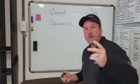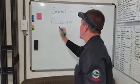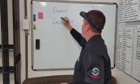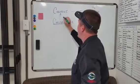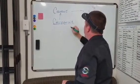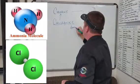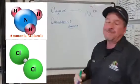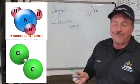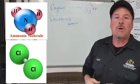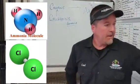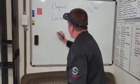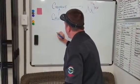All right, here's what it is: chloramine is a bond between chlorine and ammonia. So whenever you use a pond detoxifier that removes the chloramine, here's what's happening.